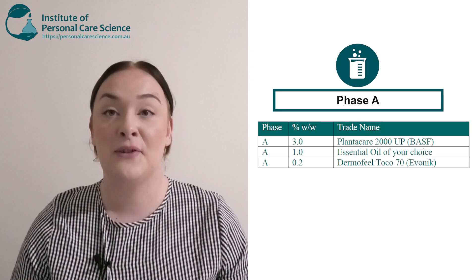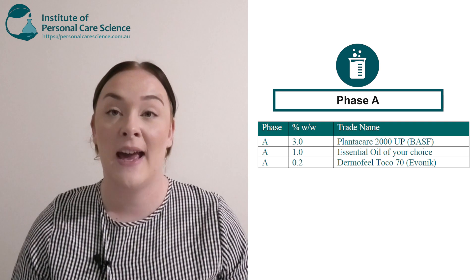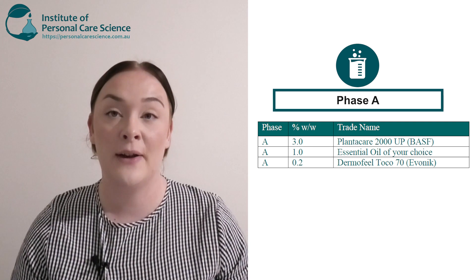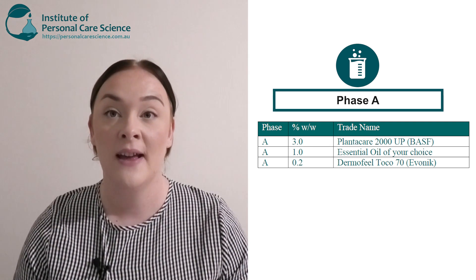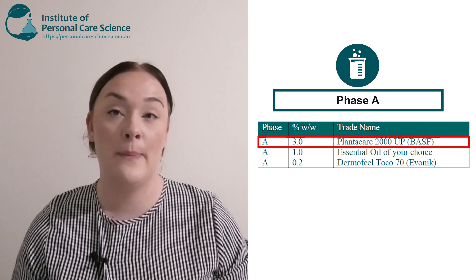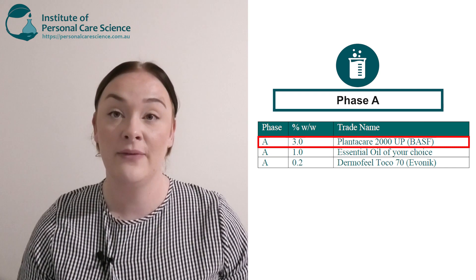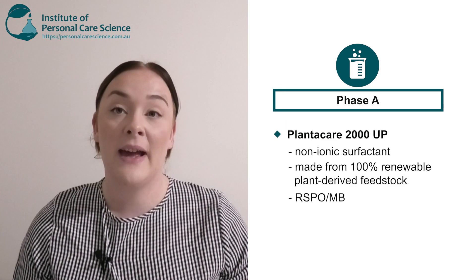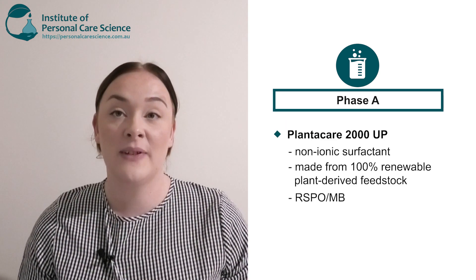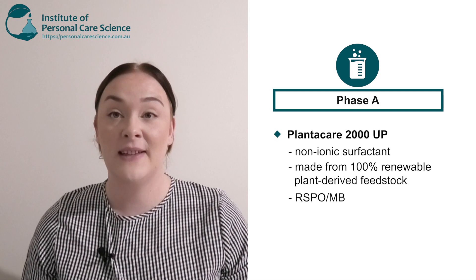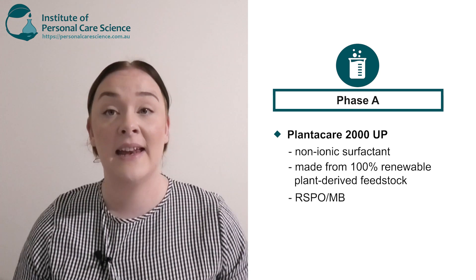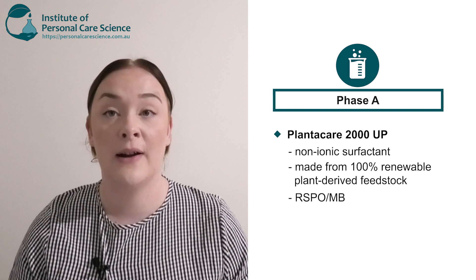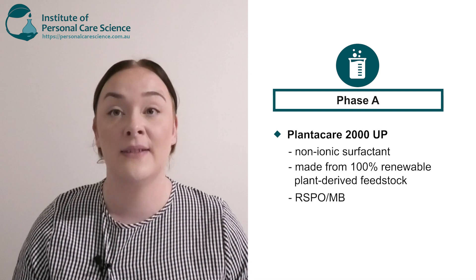Starting off is my Phase A ingredients. I'm going to be using a non-ionic surfactant — I've chosen to use the Plantacare 2000 UP by BASF. I've used this because it is made from 100% renewable plant-derived feedstock and it is also RSPO mass balance certified.